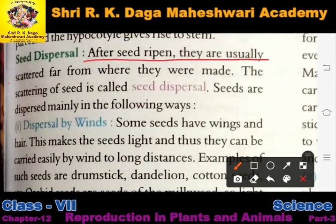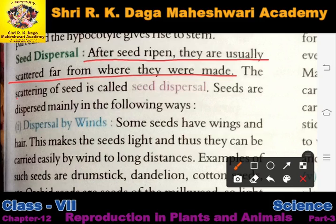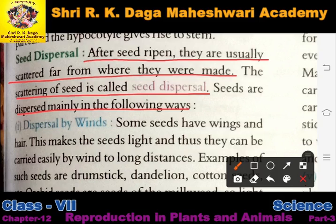After seeds ripen, they are scattered far from where they were made. Jab seed ripe hone lagta hai, woh apni actual position se thoda sa displace ho jata hai. The scattering of seeds is called seed dispersal. Seeds are dispersed mainly in the following ways.